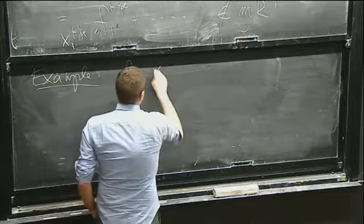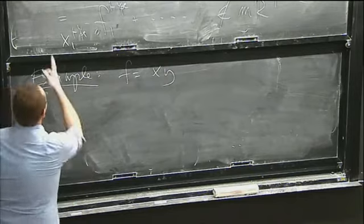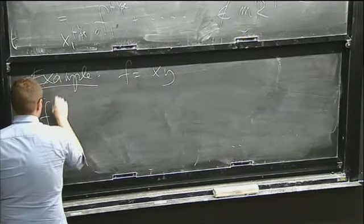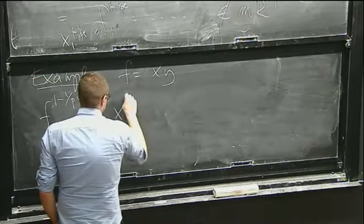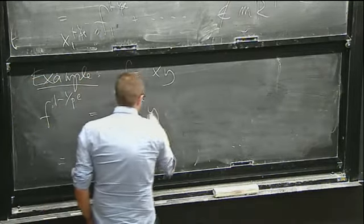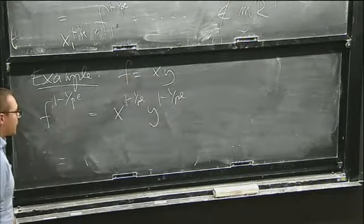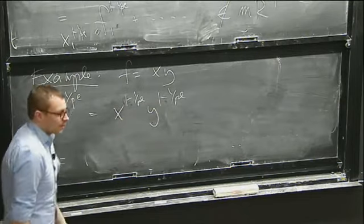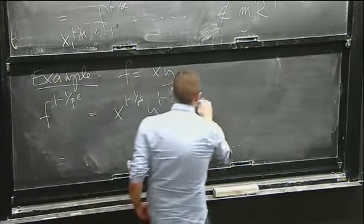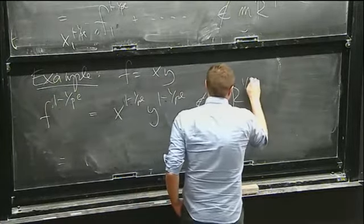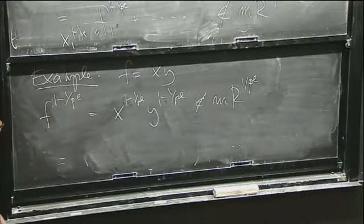This says that the F-pure threshold is at least 1 − 1/p^e. So I've found a way of approximating this from above and below to show that it's 1. Just as one more quick example, let's say that f is the product of two lines, xy. By the same trick, f^{1 − 1/p^e} = x^{1 − 1/p^e} · y^{1 − 1/p^e}, and again, this is one of the basis vectors. So this is not inside the ideal, and I also get the F-pure threshold is 1.